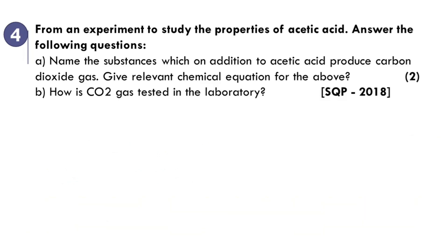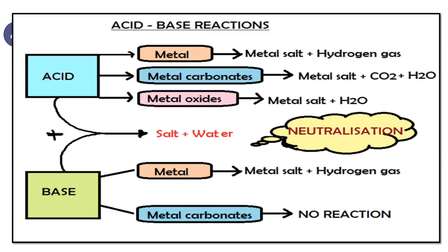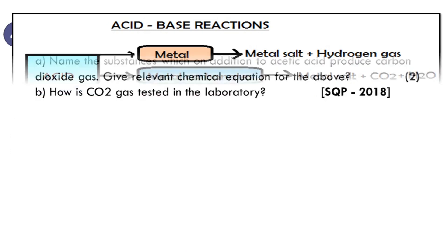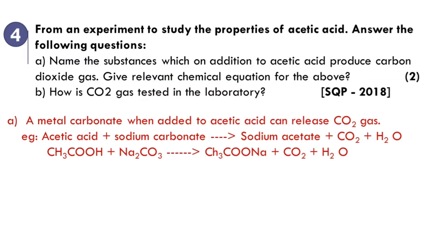Fourth question: from an experiment studying properties of acetic acid — name the substances which, when added to acetic acid, produce carbon dioxide gas, and give relevant chemical equations. The reaction where an acid produces CO₂ is when it reacts with a metal carbonate. For example: acetic acid (CH₃COOH) plus sodium carbonate (Na₂CO₃) gives sodium acetate (CH₃COONa), carbon dioxide, and water.